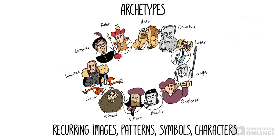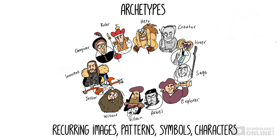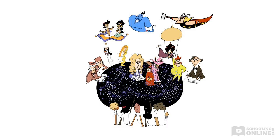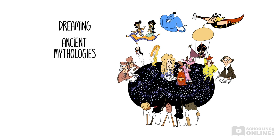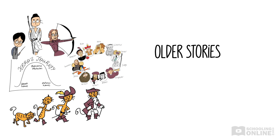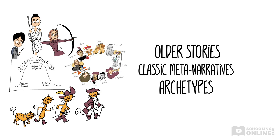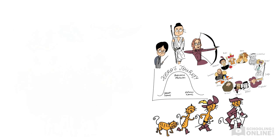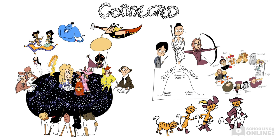Do the characters in your texts conform to any archetypes like these? Or maybe they break away from the traditional archetypes. Perhaps the hero isn't so good and moral after all, or maybe the villain turns out to be gentle and kind. Every text that you study in this module will involve storytelling. You might find references to the Dreaming, to ancient mythologies, to religious narratives, to fairy tales, to famous novels from hundreds of years ago. Referring to older stories or incorporating classic metanarratives and archetypes shows that even though we're all unique individuals, we are still connected by our common humanity across time and place.